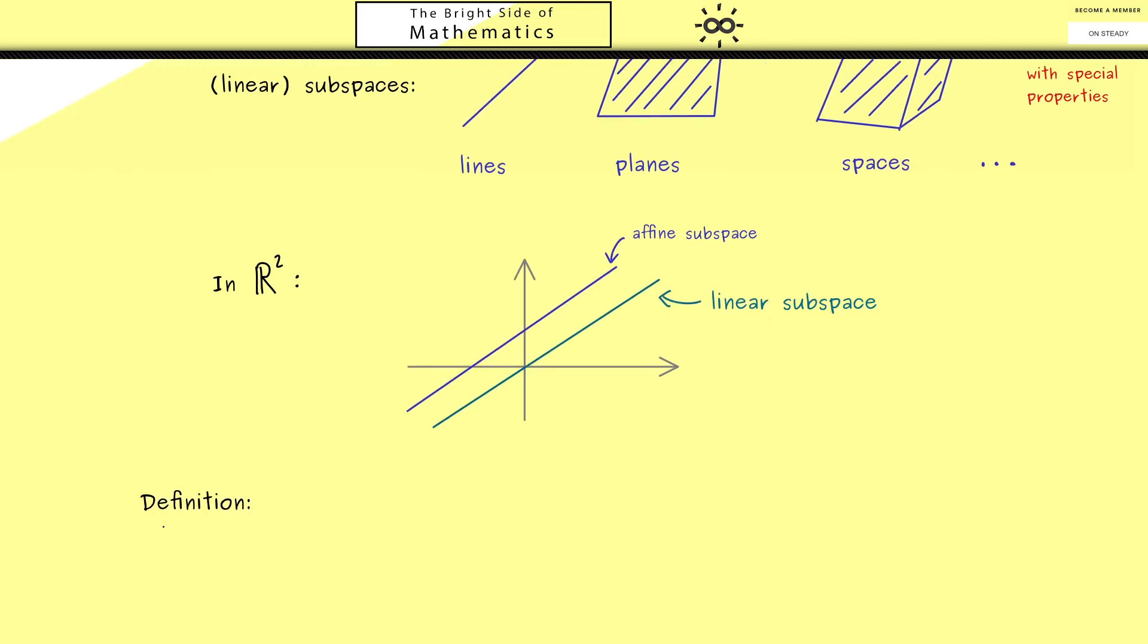So here the starting point should be our vector space Rn. And then we just consider any subset of the set Rn and we call it U. However, we immediately can exclude the empty set because a subspace should never be empty. And then we explain in which cases we can call the set U a subspace. Again here, please note, only sometimes we put the attribute linear in front of subspace if it's not clear what we talk about.